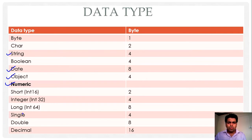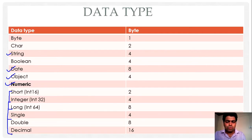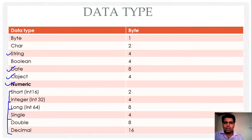The numeric data type is further categorized into short, integer, long, single, float, and decimal data types. So to store a numeric value, these six categories of data types are available in VB.NET.